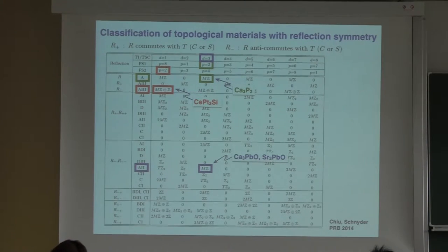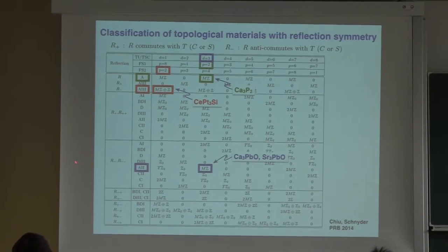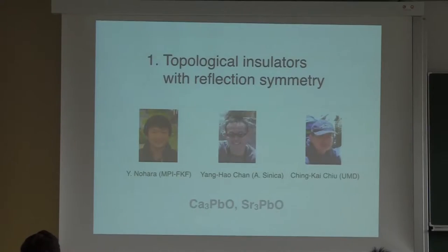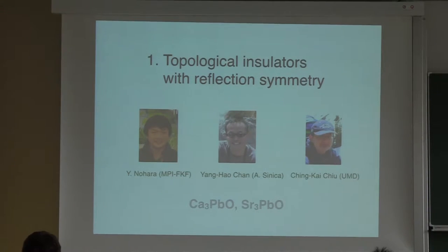The first example are antiperovskites. These are insulating, three-dimensional systems. It turns out they have a reflection symmetry that anticommutes with time-reversal symmetry, placing them in a symmetry class where non-zero mirror Chern numbers are possible, so we can have Dirac cone states on the surface. This investigation was done together with Chen Fang, who is now at the University of Maryland, Yang Hao-Chan from Academia Sinica in Taiwan, and Yoshinori Tanaka from the Max Planck in Stuttgart.